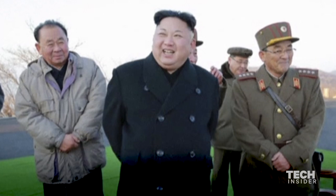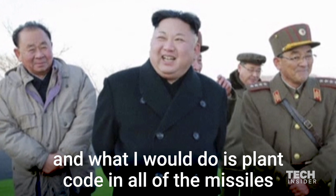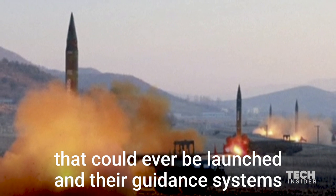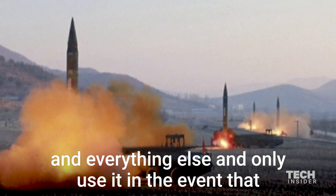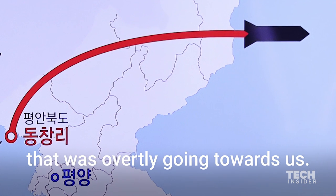If I were the United States military, I wouldn't want that capability known. And what I would do is plant code in all of the missiles that could ever be launched and their guidance systems and everything else and only use it in the event that we detected an actual launch happening that was overtly going towards us.